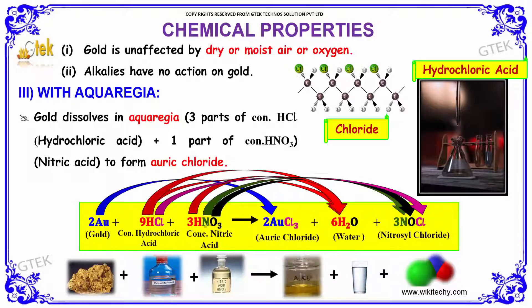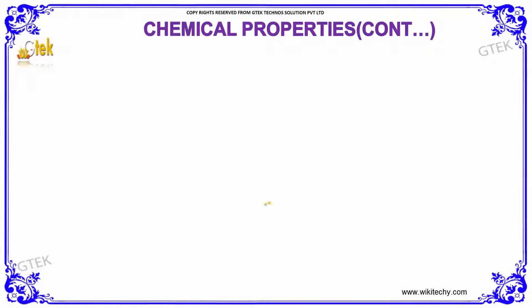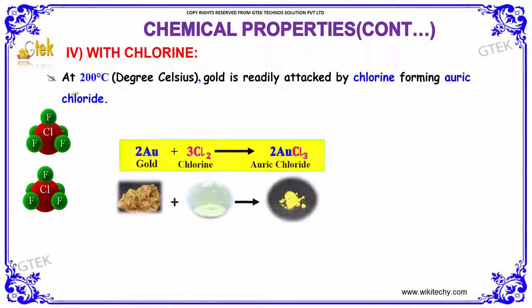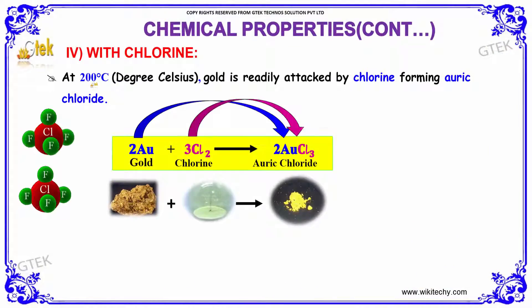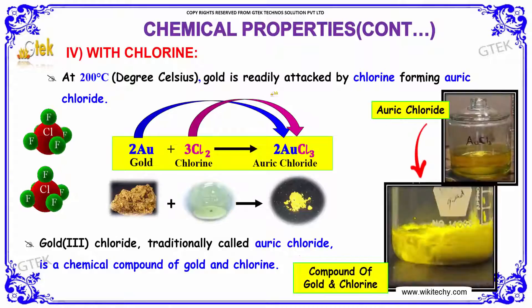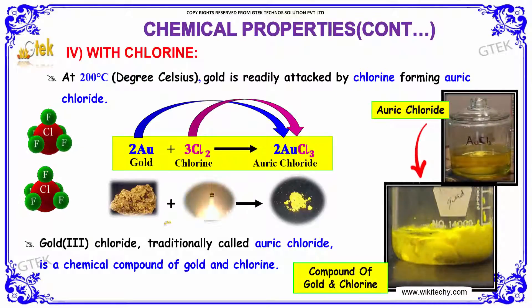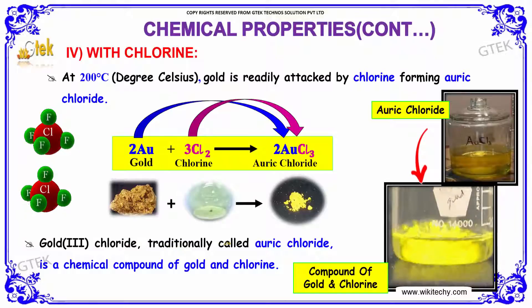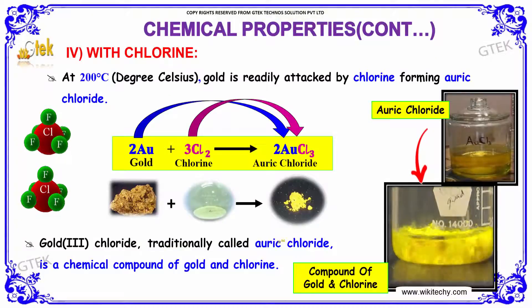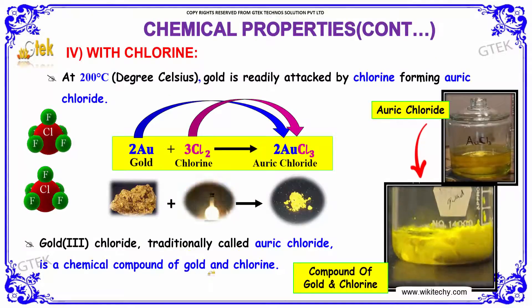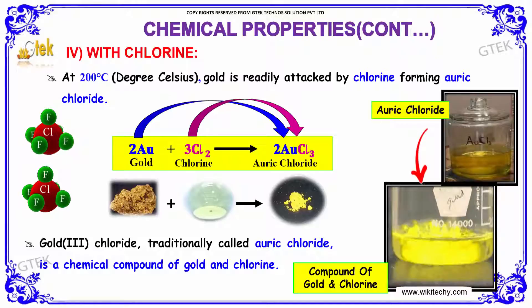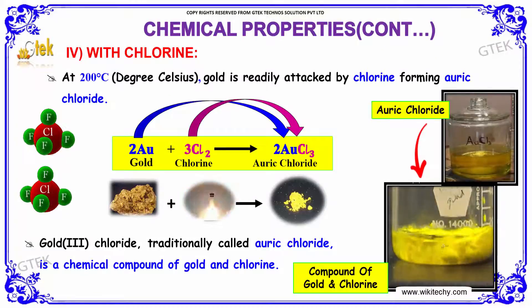Gold with HCl and nitric acid will give auric chloride, water, and nitrosyl chloride. With chlorine at 200 degrees Celsius, gold is readily attacked by chlorine forming auric chloride. Gold chloride, traditionally called auric chloride, is a chemical compound of gold and chlorine.